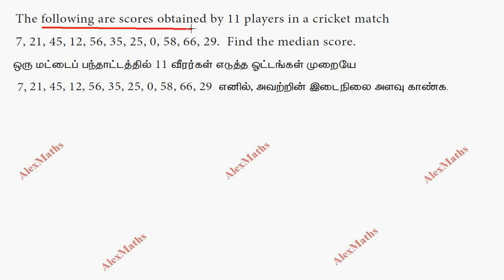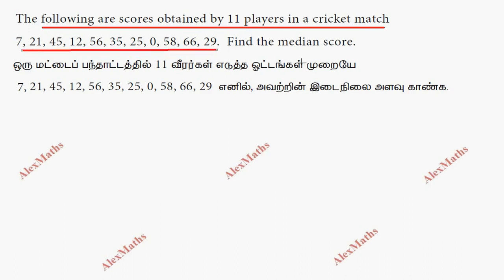The following are scores obtained by 11 players in a cricket match. We need to find the median score. We arrange the data in ascending order. The first values are: 0, 0, 7.